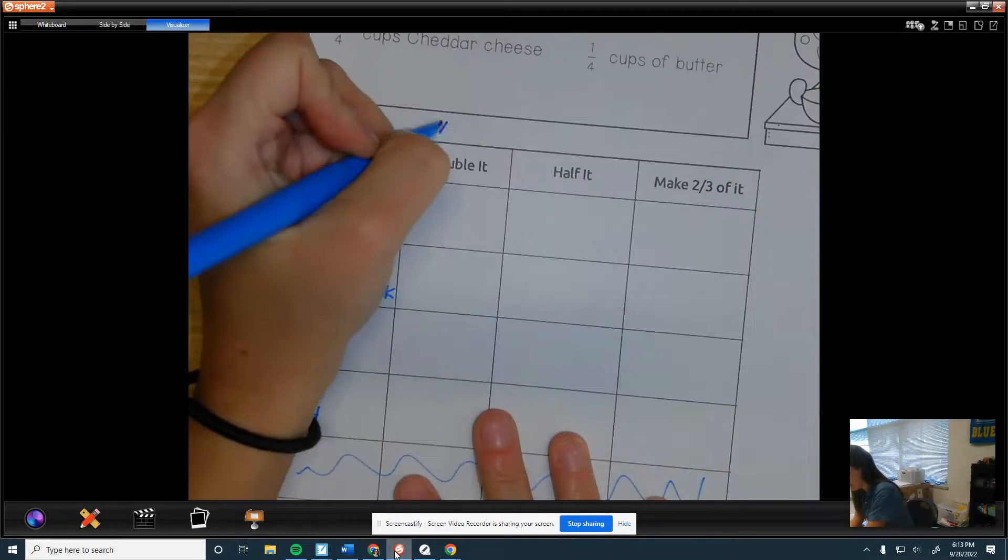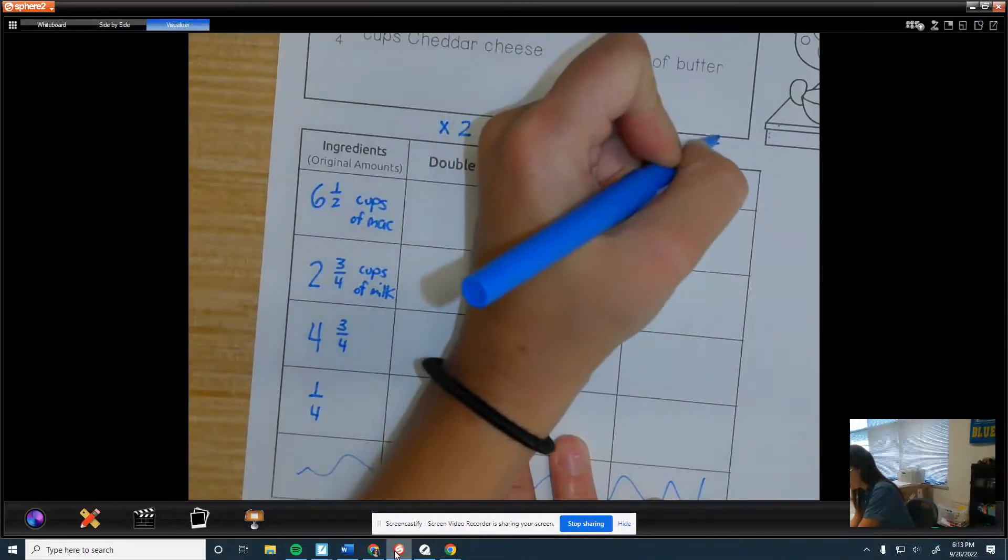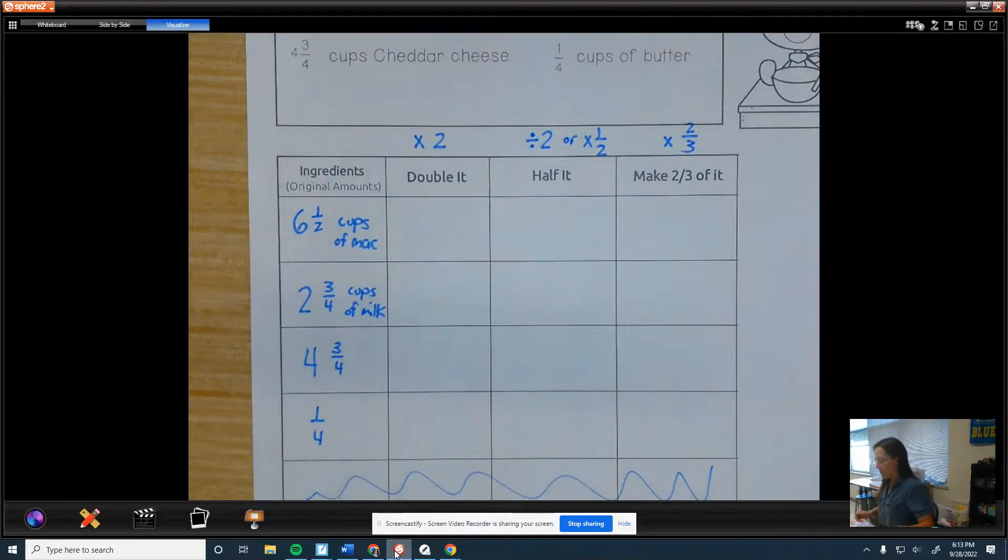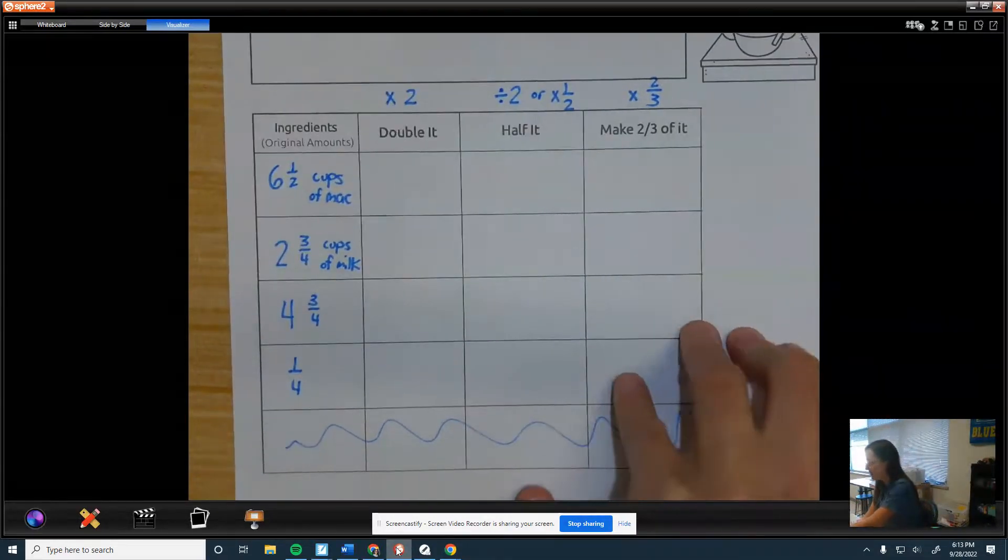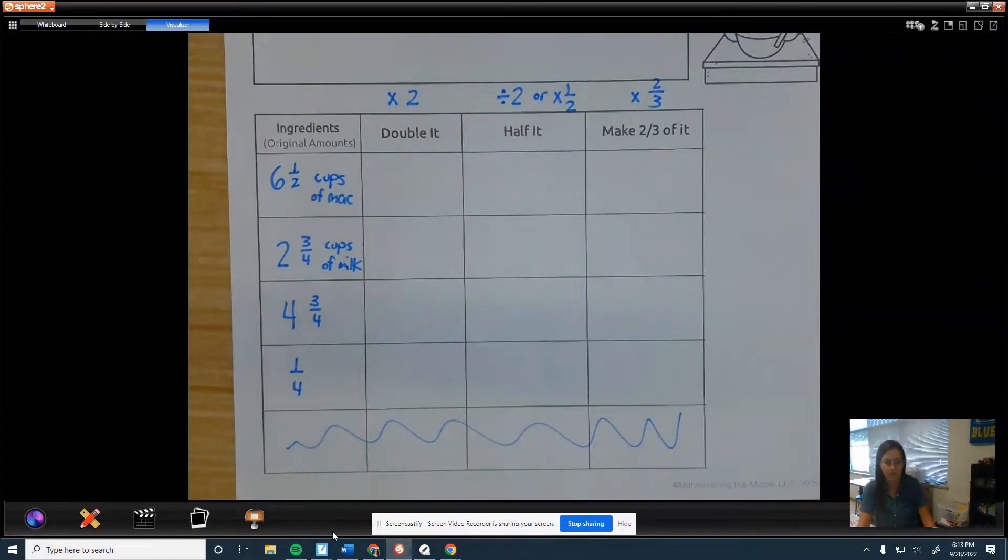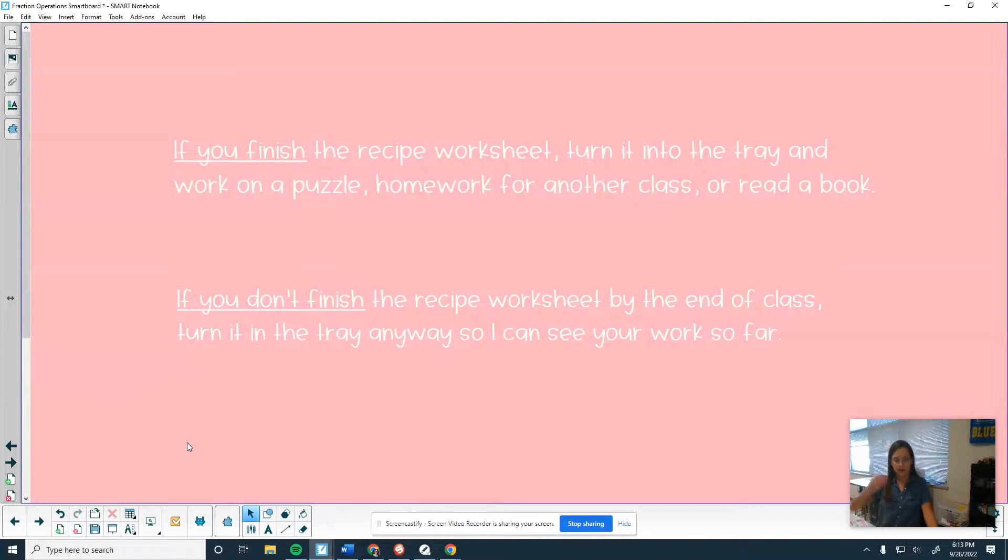So remember this is times two. This is divided by two or times a half. And this is times 2/3. So this is what you're going to be working on for the rest of class. There's not a lot of room to show work on here. So I expect you to either use the back of this page or grab scratch paper from the drawer. Let me find the directions. There we go. So you can leave this on the board so you know what to do when you're done. If you finish this, turn it in the tray and then you can work on one of my puzzles or homework for another class or read a book. If you don't finish, I still want you to turn it in the tray at the end of class just so I can see how you're doing so far. So turn in what you got done by the end of class and have a great weekend. I'll see you guys on Monday. Peace!